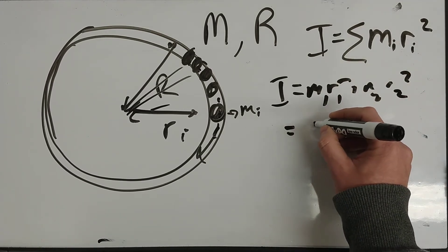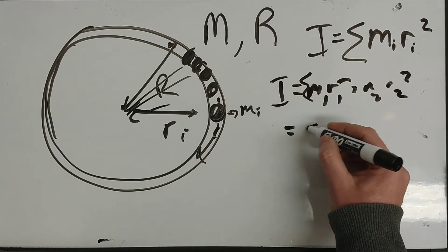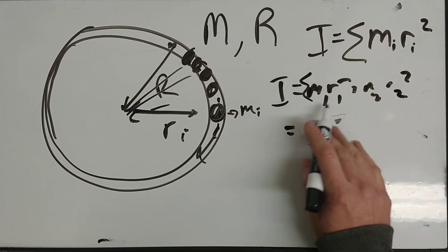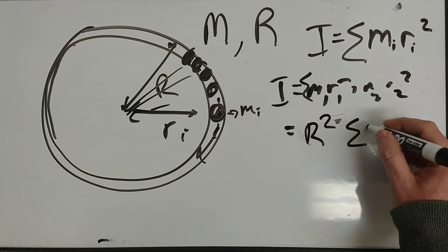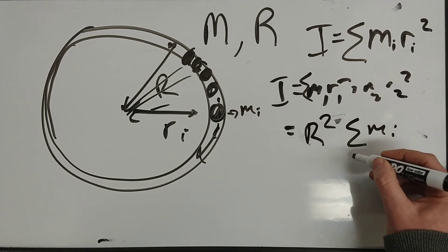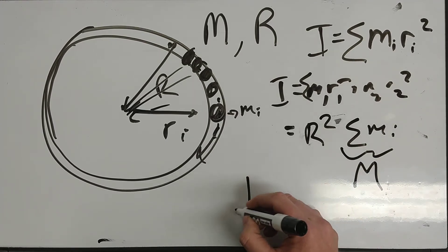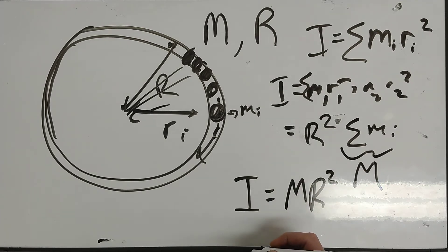I add up all these little masses times their individual radii, so it'd be like M1R1 squared plus M2R2 squared, and so on. But the sum of all those, what you end up getting is, basically, the sum of all the masses. Since it's all the same radius, that could factor out, they're all just capital R, so it's like R squared times the sum of all the little masses. Well, the sum of all the little masses is simply the total mass of the hoop, so for a hoop, it's just capital MR squared.